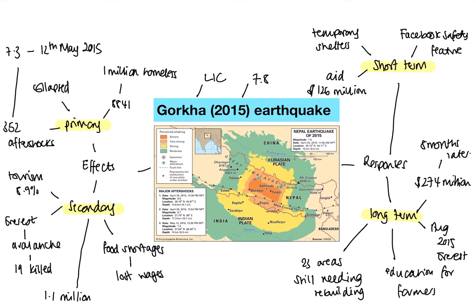Just like with primary and secondary effects, you might be asked in a nine-marker to compare short and long-term responses for the Gorkha earthquake. You'd need to be critical, weigh up whether short-term or long-term responses were more effective, and justify why. I hope this has been helpful — if you've got questions, please ask. Thank you.